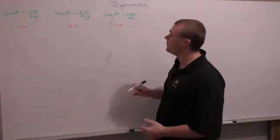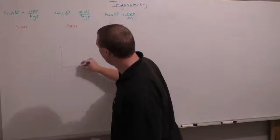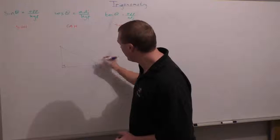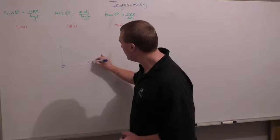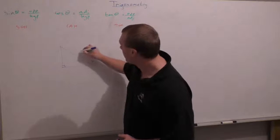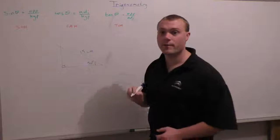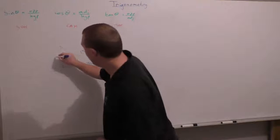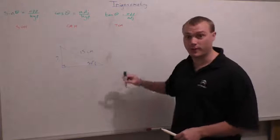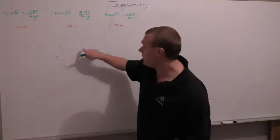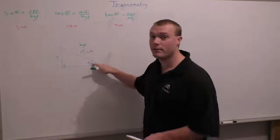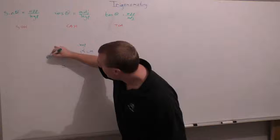Looking at an example now, let's say here is our triangle. There's the right angle. Let's say this is going to be 30 degrees. The hypotenuse I'm going to say is 15 centimetres, and we're going to work out this side here. The first thing we always do is label the sides of the triangle. Here's the right angle, and opposite the right angle is our hypotenuse.